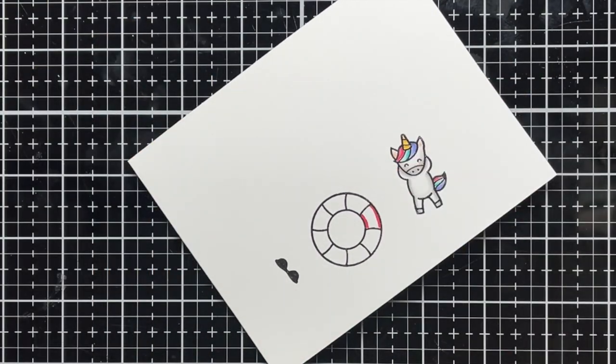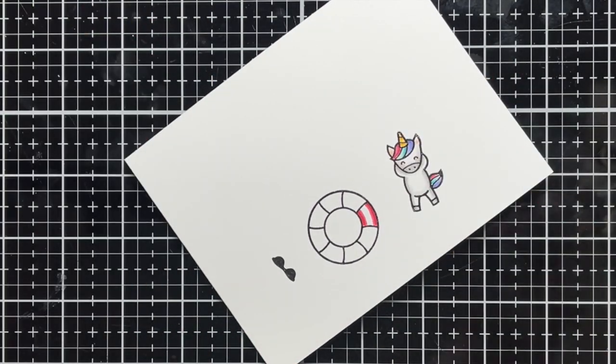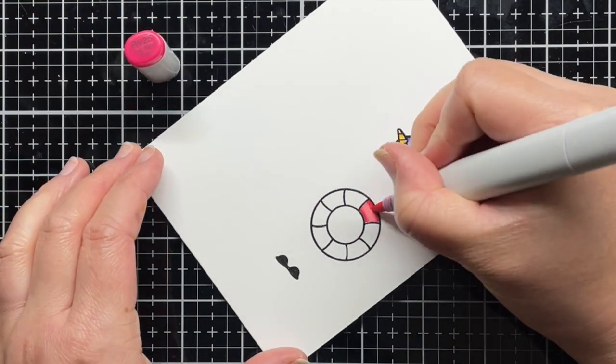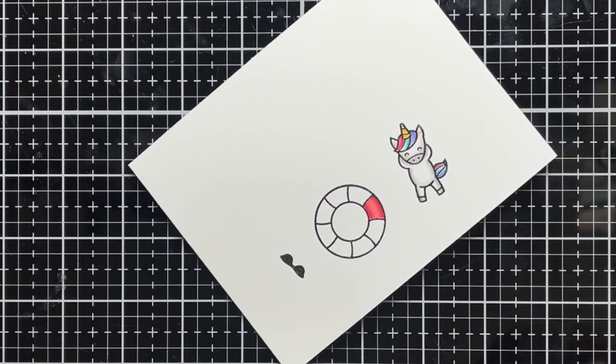I use the same process with three markers for each color of my rainbow inner tube. I keep my darkest shades on the inside and outside of the inner tube and use my lightest shade in the middle to give the tube a little dimension.